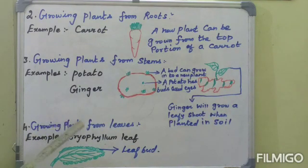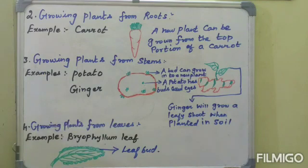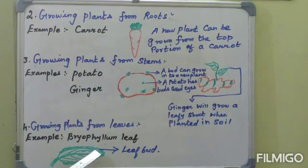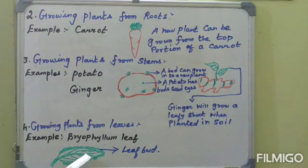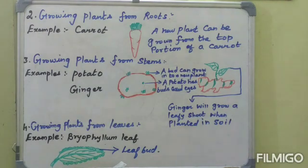Fourth method: how new plants grow from leaves. In Bryophyllum, the leaf has many buds on its margin. New plants arise from these buds when the buds fall on moist soil.